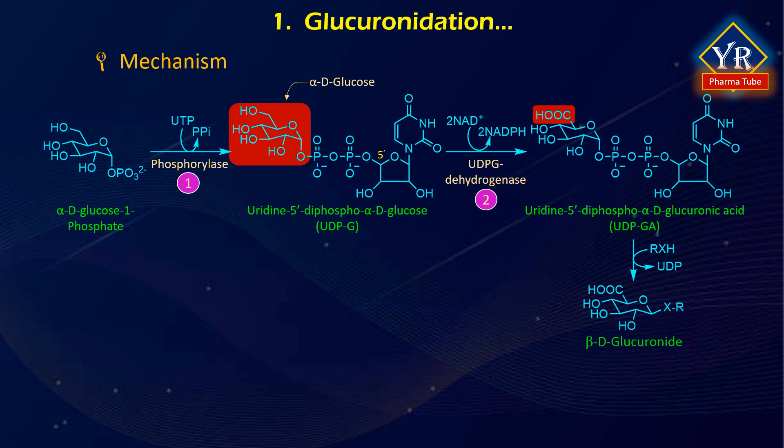Uridine is a combination of uracil and ribose sugar. When uridine is attached to the phosphate group then it is called uridine diphosphate. The glucuronic acid is a hydrophilic molecule. In this reaction the sixth carbon atom of the initial product UDPG is oxidized to a carboxylic acid in UDPGA.